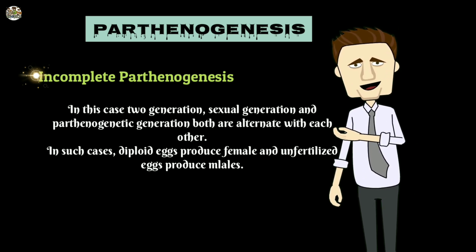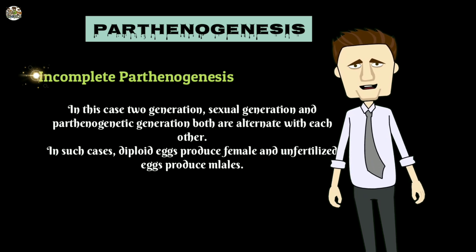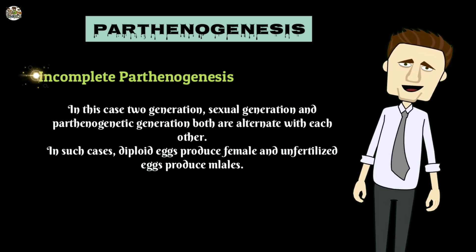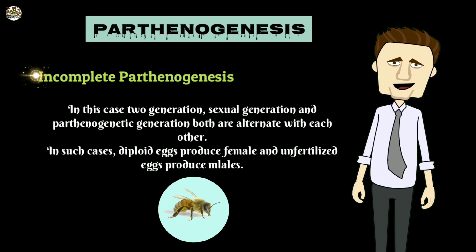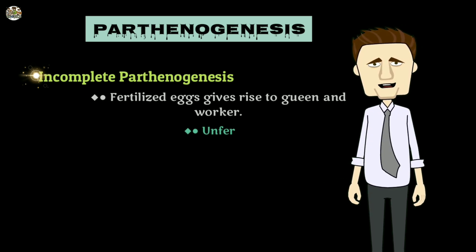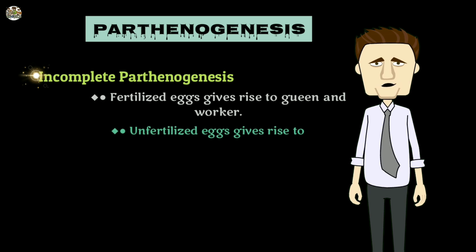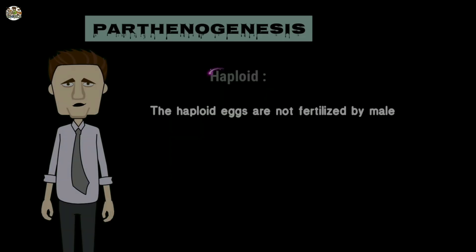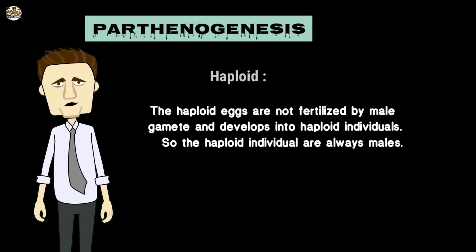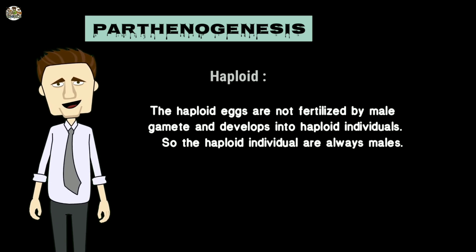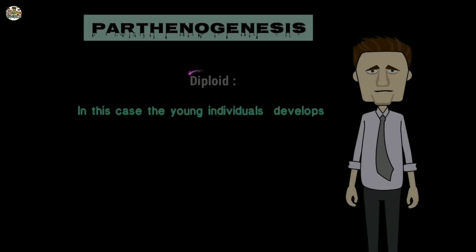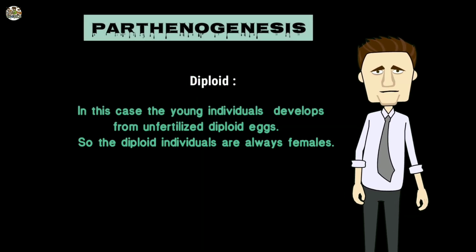In incomplete parthenogenesis, diploid eggs produce females and unfertilized eggs produce males. For example, in honey bees, fertilized eggs give rise to the queen and workers, while unfertilized eggs give rise to drones. The haploid eggs are not fertilized by male gametes and develop into haploid individuals, which are always male.